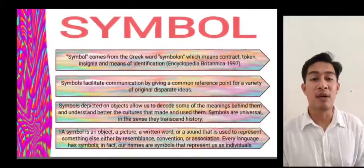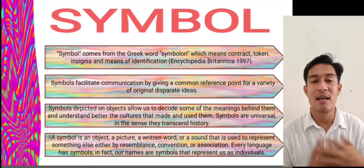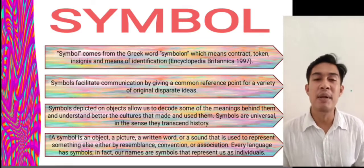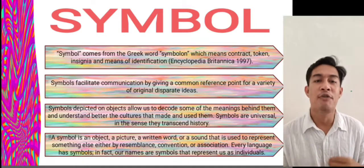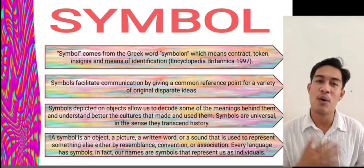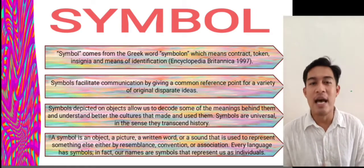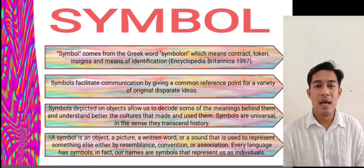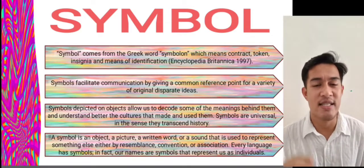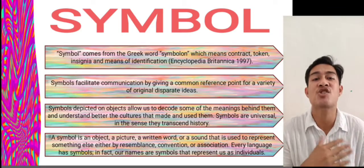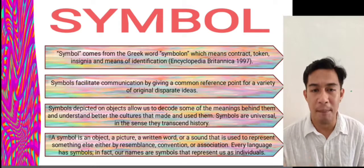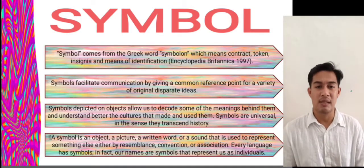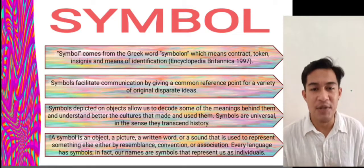Symbol. Symbol comes from the Greek word symbolon, which means contract, token, insignia, and means of identification according to Encyclopedia Britannica 1997. Symbols facilitate communication by giving a common reference point for a variety of original disparate ideas. Symbols depicted on objects allow us to decode some of the meanings behind them and better understand the cultures that made and used them. Symbols are universal in the sense that they transcend history. In fact, our names are symbols that represent us as individuals.